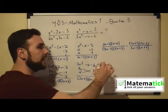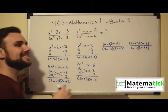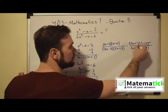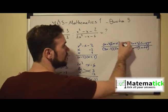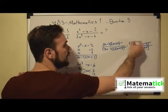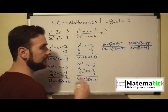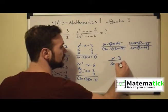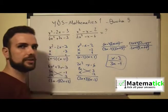Let's start simplifying: (x - 2) cancels with (x - 2). We have (x + 1) and (x + 1), which cancel. We have (2x + 3) and (2x + 3), which also cancel. The only things left are (x - 3) over (3x - 1).